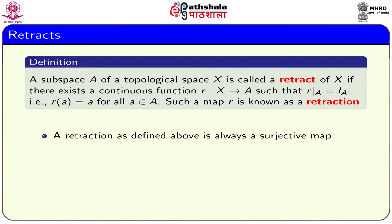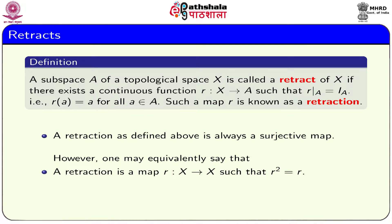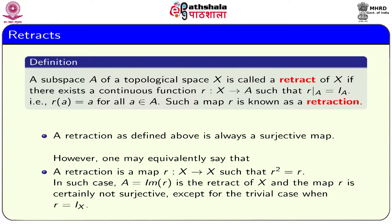A retraction as defined above is always a surjective map. However, one may equivalently say that a retraction is a map R from X to X such that R² = R, meaning composing R with R gives back R. In this case, if we take A as the image of the map R, then A is a retract of X. But this map R is not surjective except when R is the identity map.